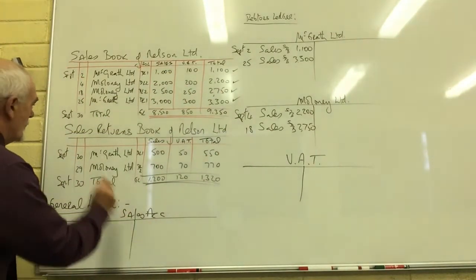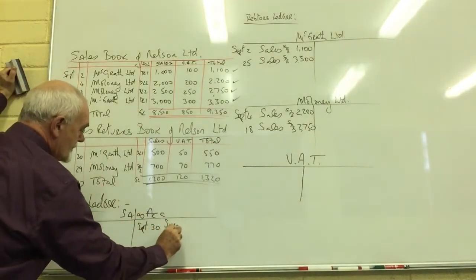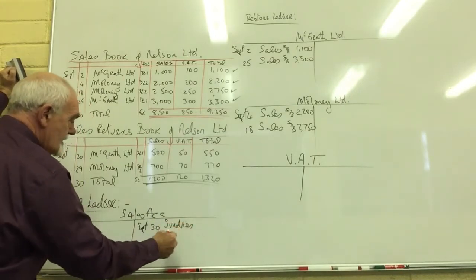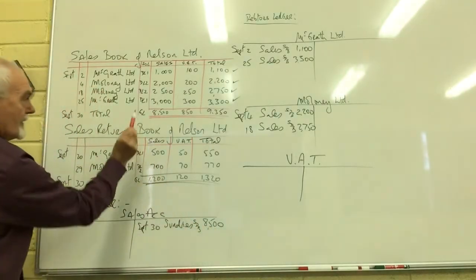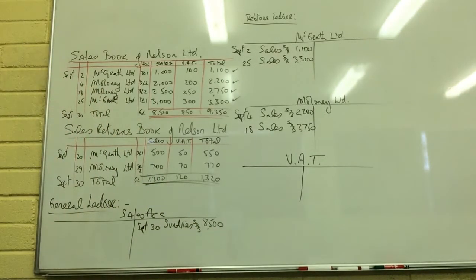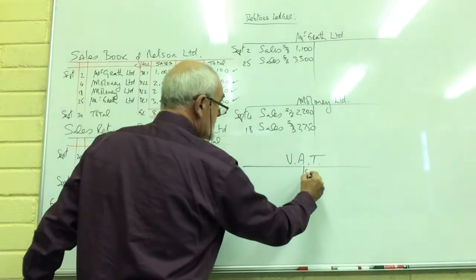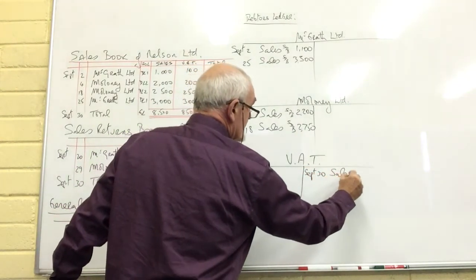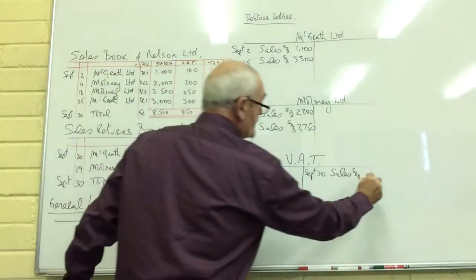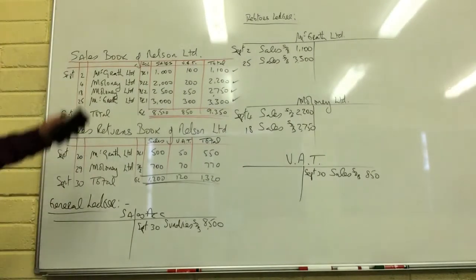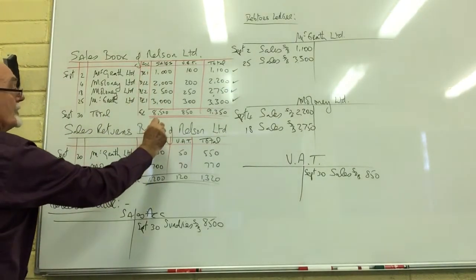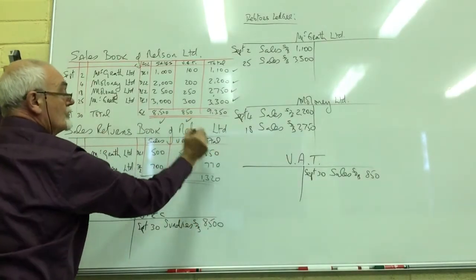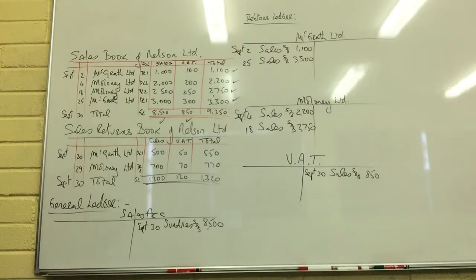Now we must credit the sales account on September the 30th — sundries, miscellaneous — with £8,500, VAT not included. And I must put the total of the VAT on the credit side of the VAT account: September 30th, the VAT on the sales is £850. So we've debited McGrath and Maloney four times because they received, and I'm crediting the sales account with £8,500 and the VAT account with £850, completing the double entry for the sales day book.